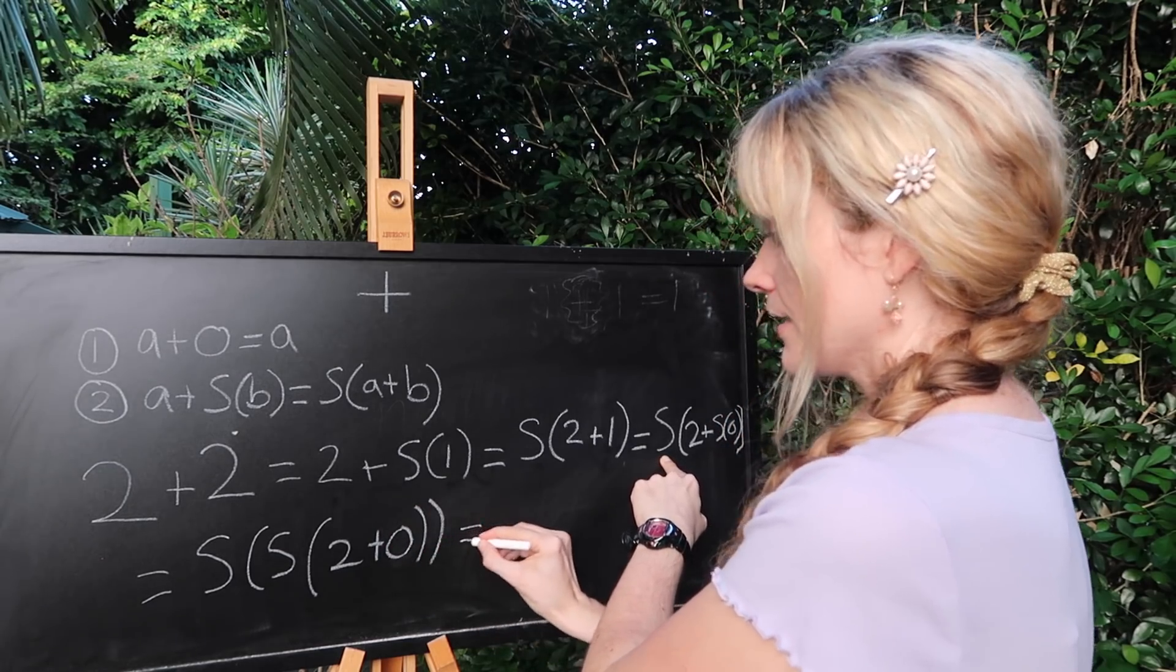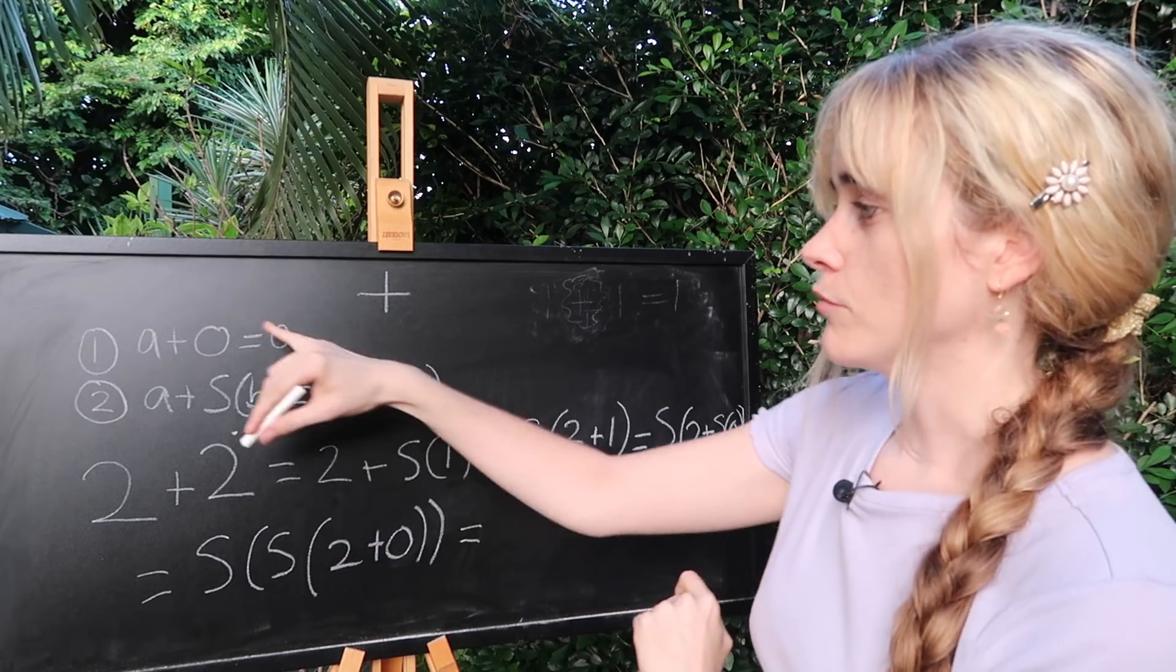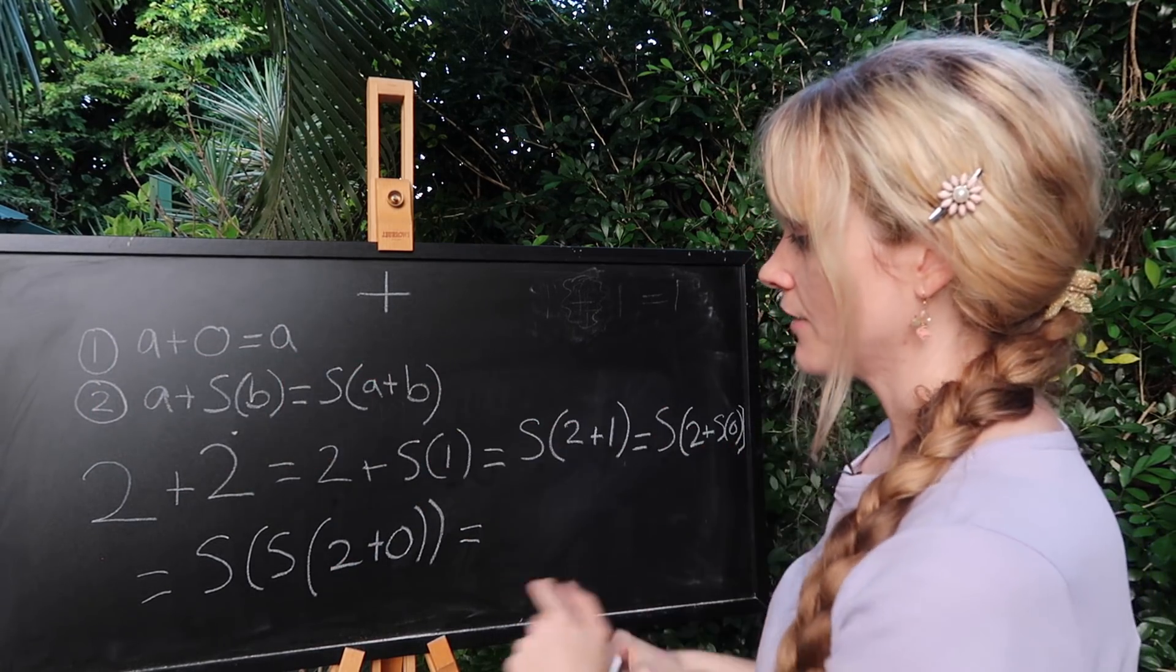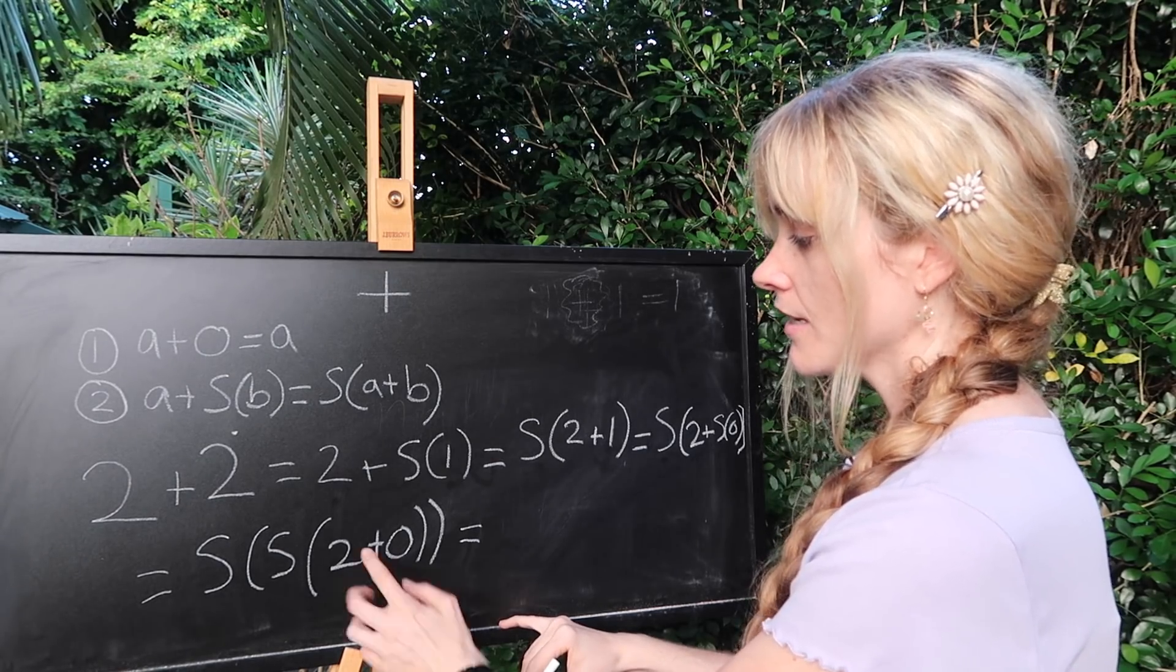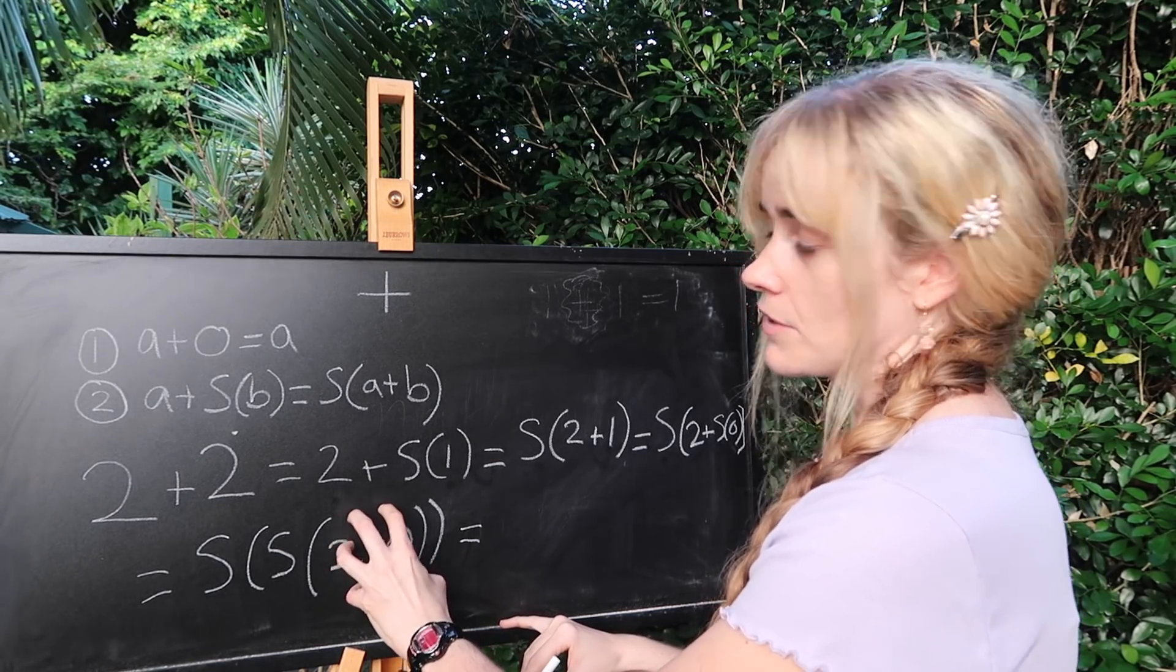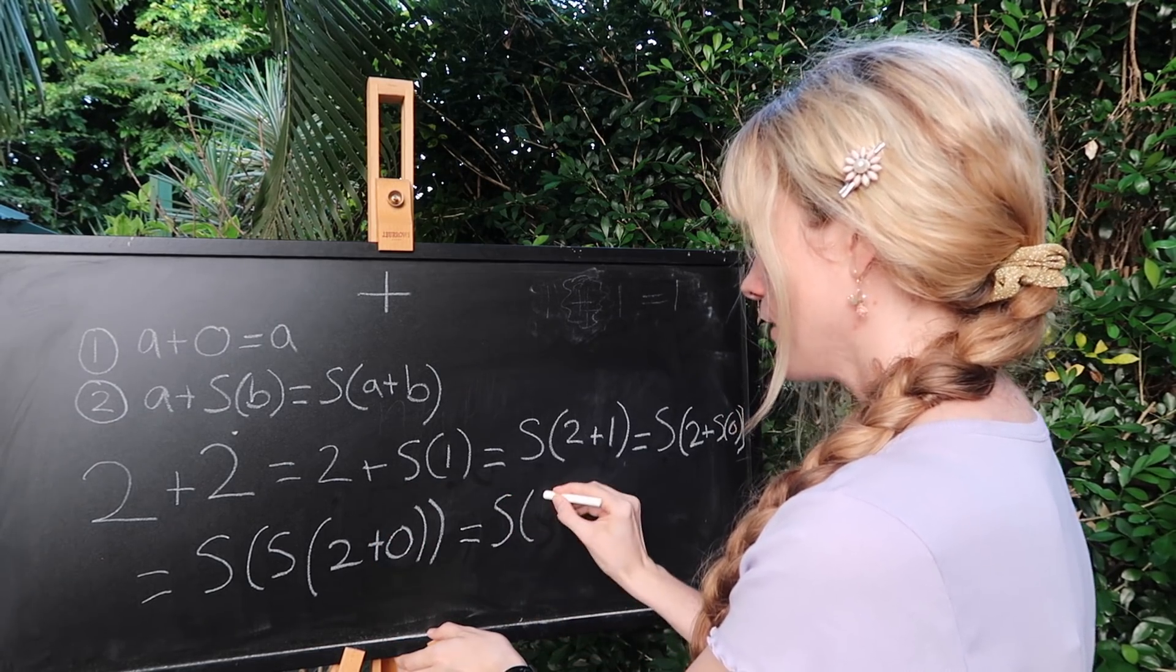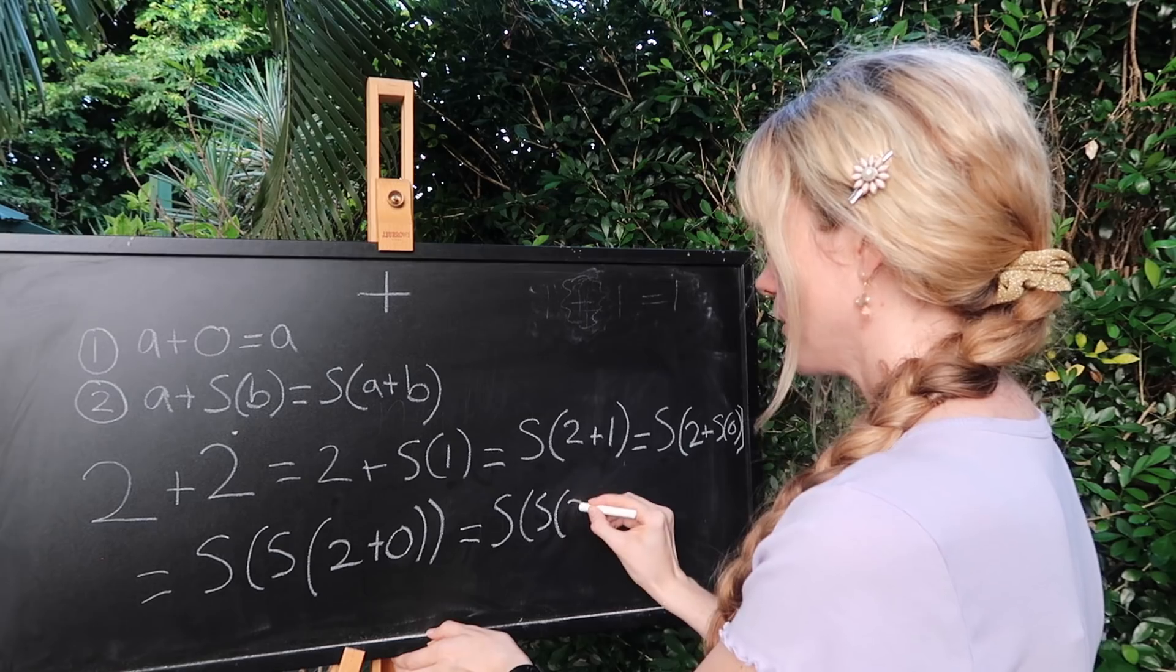Alright. Now we can employ rule one from before. If you add zero to something it remains unchanged. We're adding a zero to two in here. So this is all just going to be two. So we've got the successor of the successor of two.